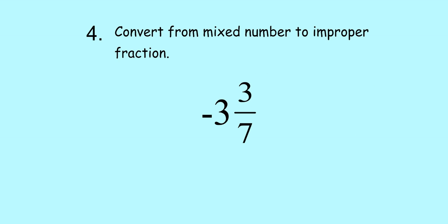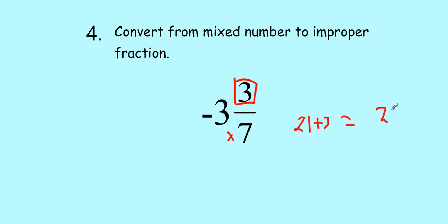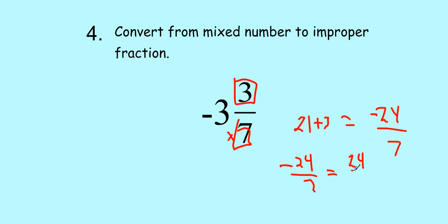Let's do that again for number four. We're going to convert negative three and three-sevenths. The negative sign does not change how we work with the fraction — our answer is just going to be negative. We take the whole number out front times our denominator: 3 times 7 is 21. Then we add our 3 pieces, giving us 24 pieces over 7. We keep the same denominator. Now it's negative — that negative can go in the numerator or in the denominator. Negative twenty-four over 7 is equal to twenty-four over negative 7.